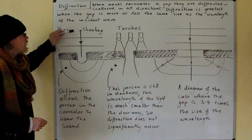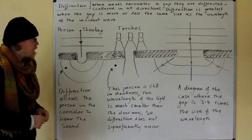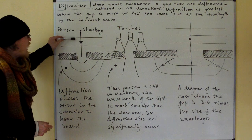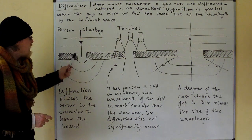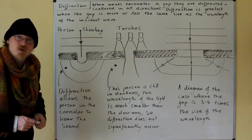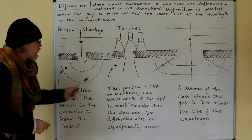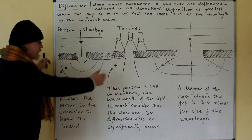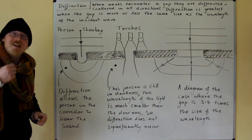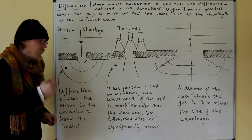Here we have a person shouting in a classroom and the waves are travelling towards the doorway and the wavelength of the waves is similar, very similar to the width of the doorway. So the doorway diffracts the waves and scatters them in all directions. So this person in the corridor is able to hear the shouting in the classroom.